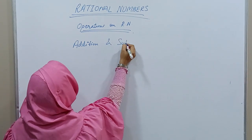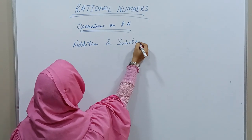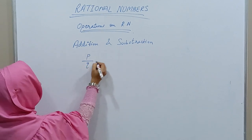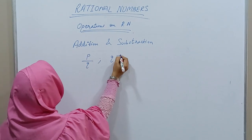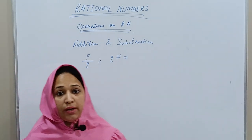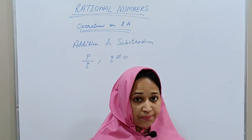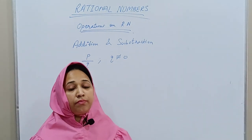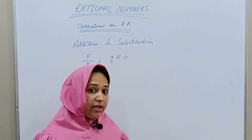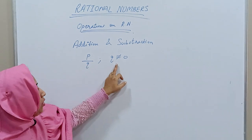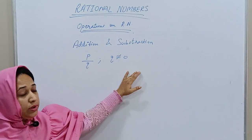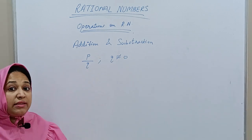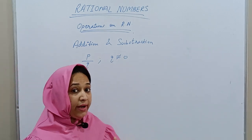A rational number is any number in the form P/Q where Q is not equal to 0. P and Q are integers — meaning 0, positive numbers, and negative numbers — and the denominator Q must not be equal to 0.